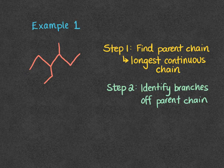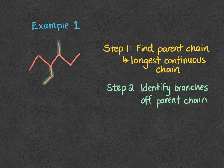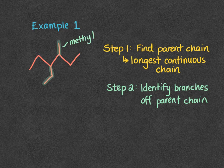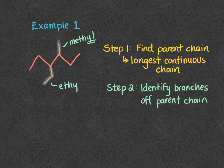The next step is to identify branches coming off of that parent chain. I'm going to highlight the two branches. One branch and the other — we're going to name those branches. This branch has one carbon, so it's a methyl. When we have a branch, we change the ending to -yl. Our other branch has two carbons and it's going to be an ethyl.